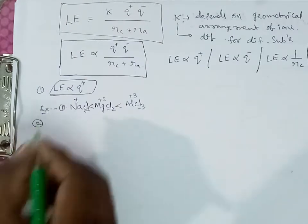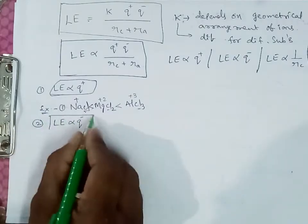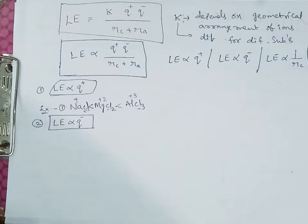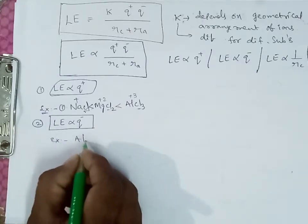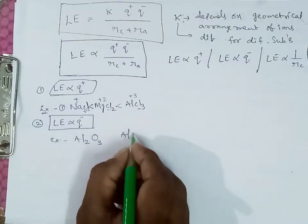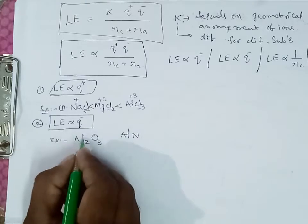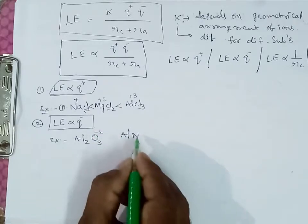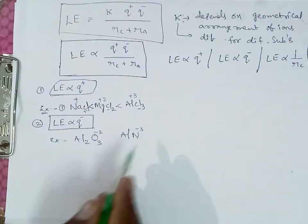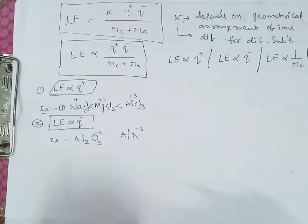Second, lattice energy is directly proportional to the charge on the anion. For example, comparing aluminium oxide and aluminium nitride: the cation is the same (aluminium) but the anion is different. The charge on the oxide anion is −2 and on the nitride anion is −3. According to our relation, when charge increases, lattice energy also increases.